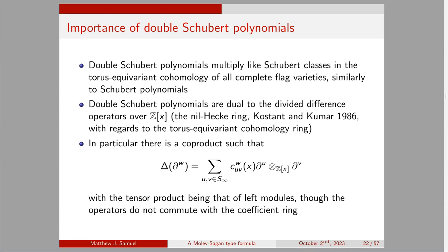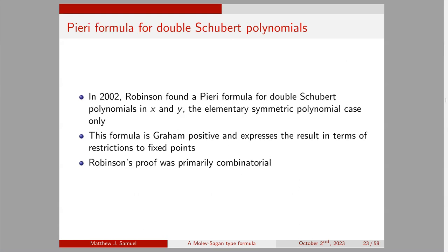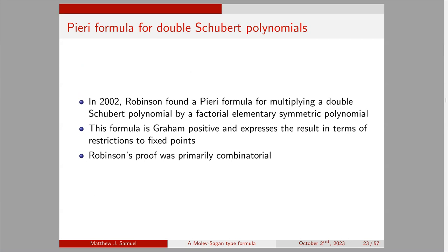The nil-Hecke ring has a coproduct Δ such that applying Δ to ∂_w gives a sum over all u, v in S_infinity of the structure constant c_{u,v}^w(x) times ∂_u ⊗ ∂_v, where the tensor product is of left modules over the polynomial ring. In 2002, Robinson found a Pieri formula for multiplying a double Schubert polynomial by a factorial elementary symmetric polynomial — the formula is Graham-positive and expresses the result in terms of restrictions to fixed points in equivariant cohomology, with Robinson's proof being primarily combinatorial.